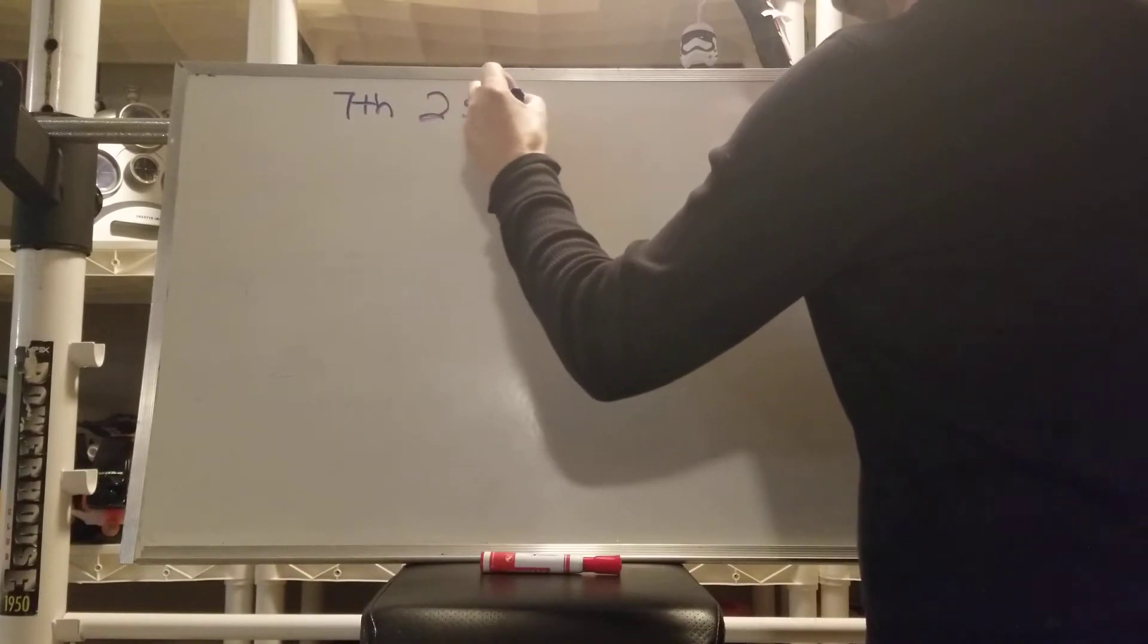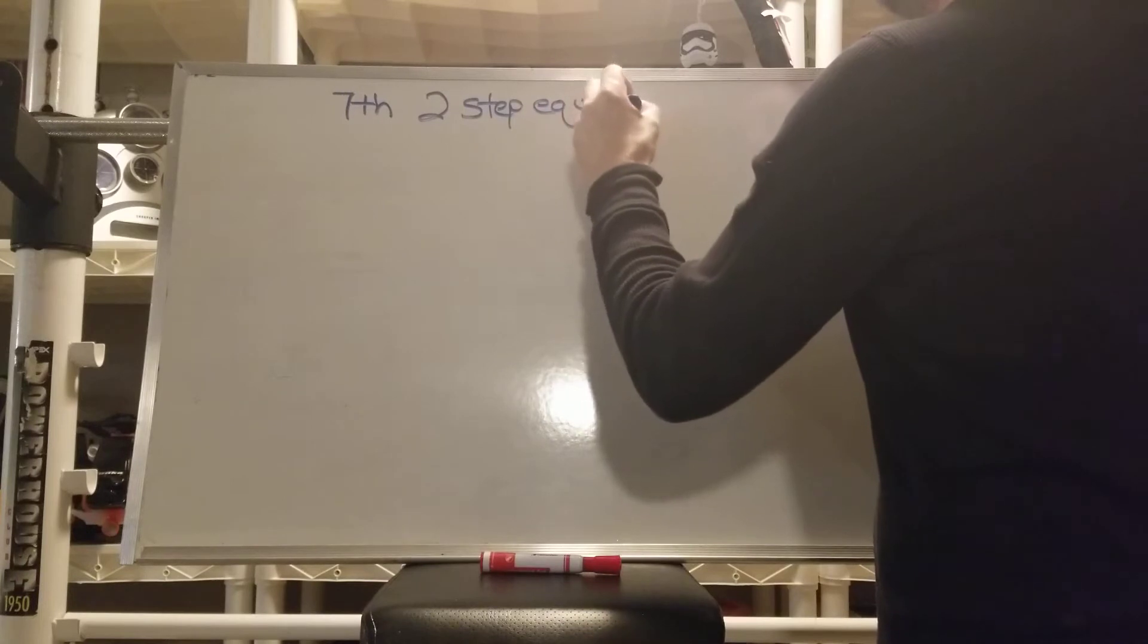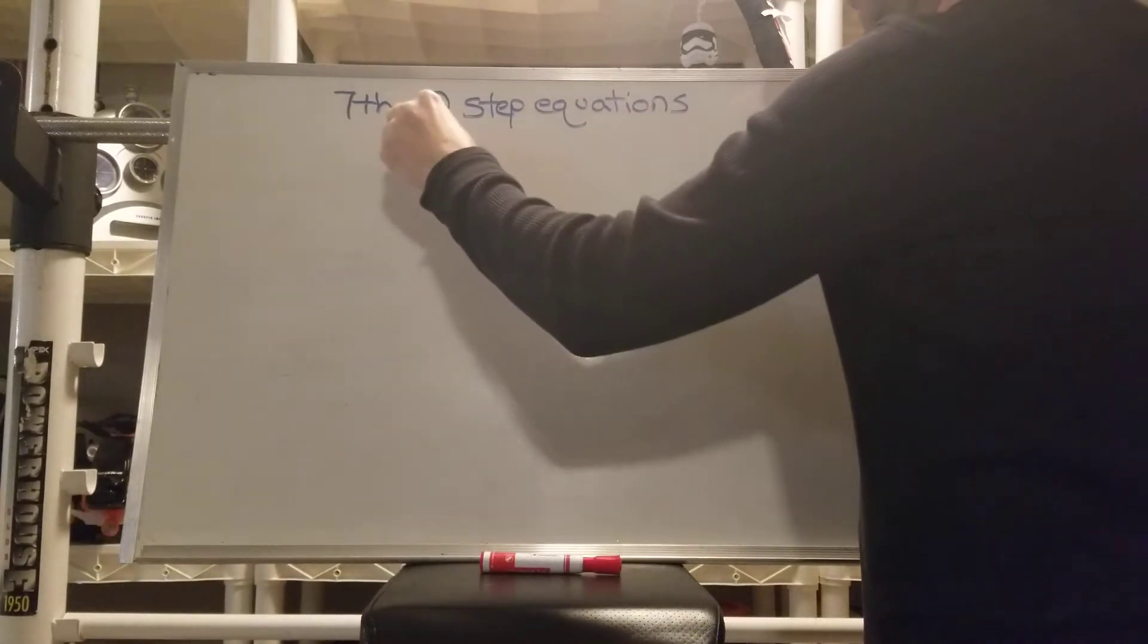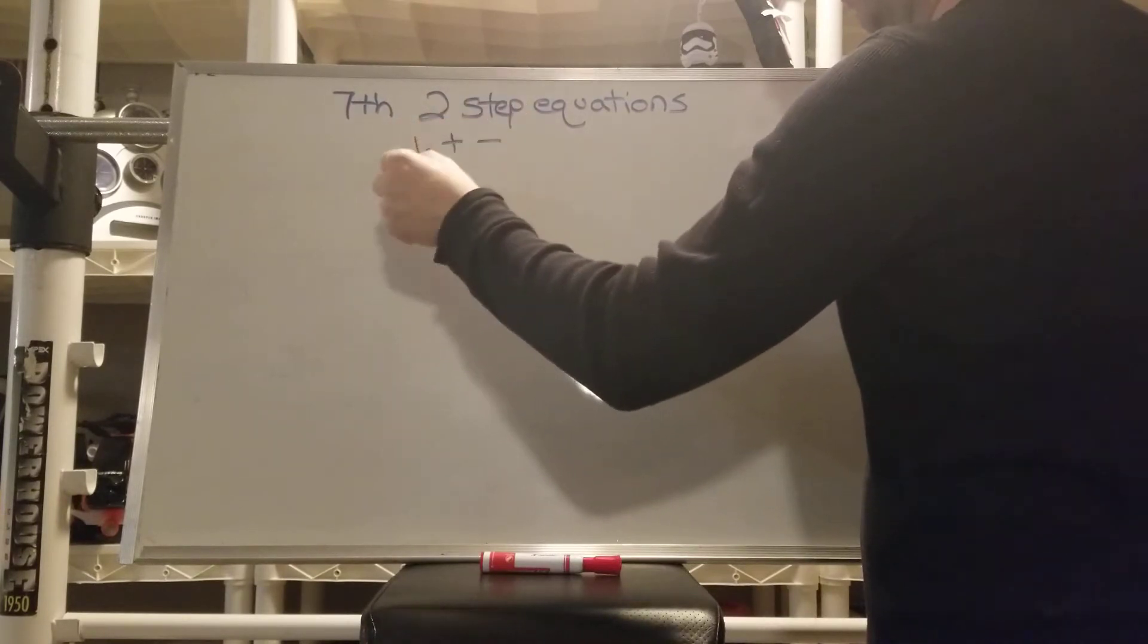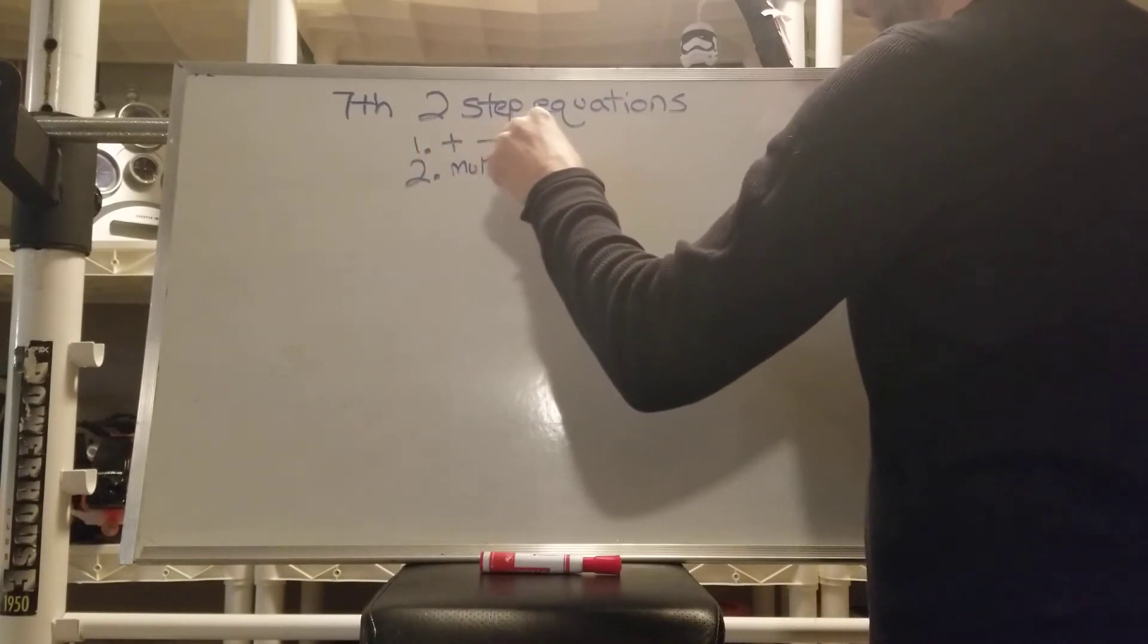So, two-step equations. And there are actually two steps to these. Step one is add and subtract. And step two is multiply or divide.